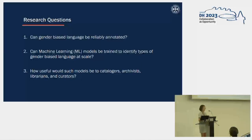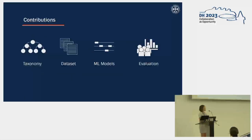Those descriptions make up the dataset we are investigating, and we came up with three research questions to guide our work. First, can humans reliably annotate gender bias language in the descriptions? Second, can machine learning models be taught to automate that annotation process so it could be scaled up? Third, how useful would such models be for catalogers, archivists, librarians, and curators? Through investigating these questions, we've produced: a taxonomy of gender bias language, a dataset manually annotated for gender biases, machine learning models trained on the annotated dataset, and an interdisciplinary evaluation approach that brings together qualitative and quantitative methods.